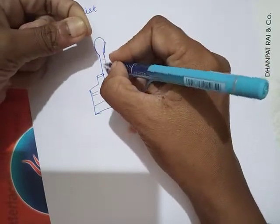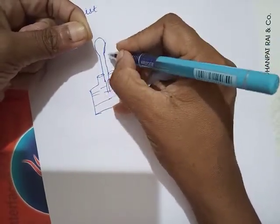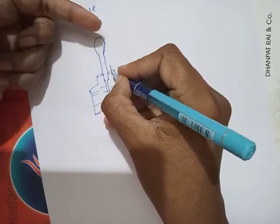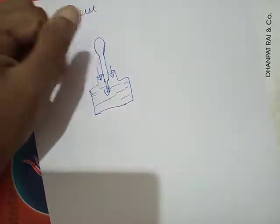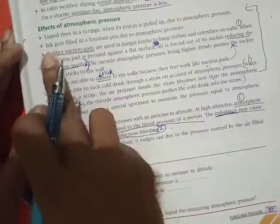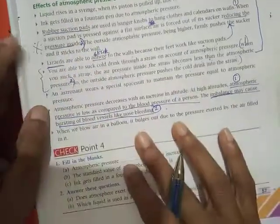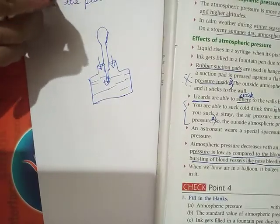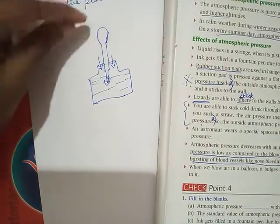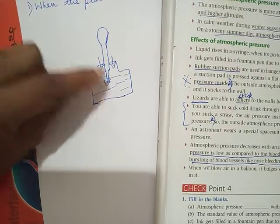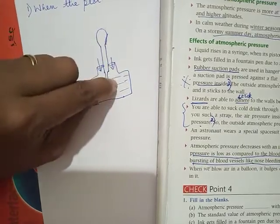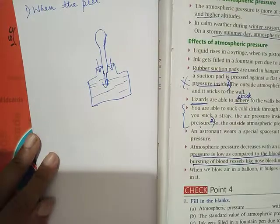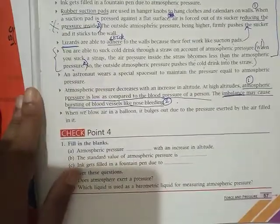So when they release, this atmospheric pressure acting outside will push this ink into the ink filler. It rises. Can you understand? So if I ask you the question, how does ink rise into a fountain pen? What you will write? When it is pressed, the air inside is pushed out. Therefore, the pressure inside decreases when compared to the atmospheric pressure. So atmospheric pressure pushes the ink inside the ink filler. Is it clear? So this is how your answer should be children.